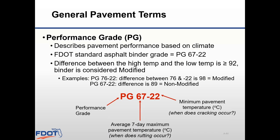FDOT's standard asphalt binder grade is PG67-22, which means the binder should be rut resistant up to temperatures of 67 degrees Celsius and crack resistant down to temperatures of minus 22 degrees Celsius. A binder is considered modified when the difference between the high temperature and the low temperature is 92 or more. For example, PG76-22 has a difference of 98 between 76 and minus 22, so this binder is modified. PG67-22 has a difference of 89, so it is not a modified binder.